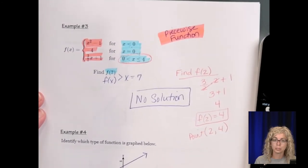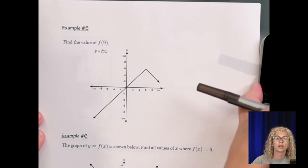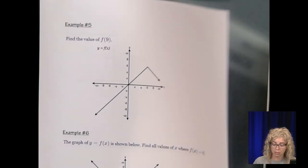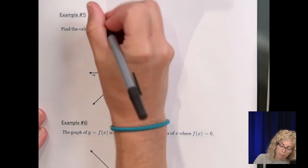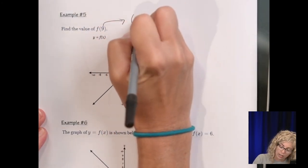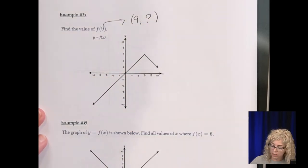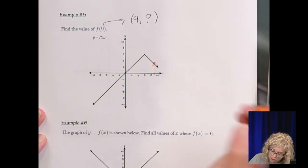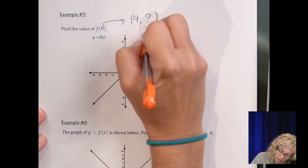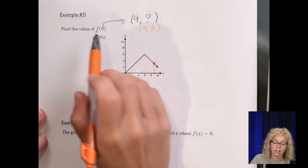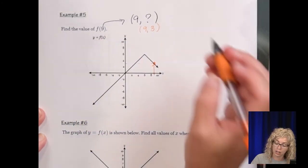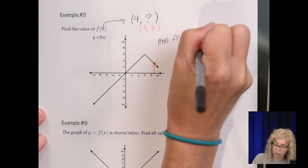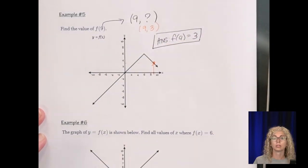Number 5. Find the value of f of 9 given the function just y equals f of x. So they're saying this is for any function, they're just naming that graph. So f of 9, what that means is, it's usually f of x. So it's saying x is 9. What's y? So we go over to 9 on the x-axis right here. And we go up to the graph. And that's the point right here. So go over, and it's the point 9, 3. So when they say f of 9, they want the y value when x is 9. So our answer, f of 9 equals 3.